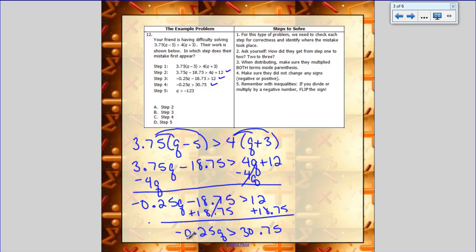So now I have to divide both sides by negative 0.25. So remember, I'm dividing by a negative, which means that when I divide, I have to flip my symbol. And so if I take 30.75 divided by negative 0.25, I get negative 123. So I have Q is less than negative 123 because I had to flip my symbol. I divided by negative, and if you look, this step 5 does not match my step 5. So the mistake first appeared in step 5.